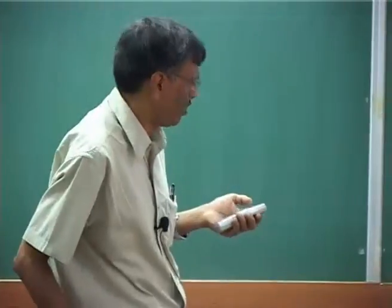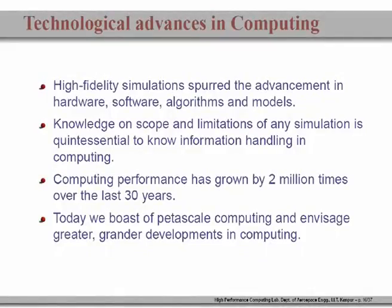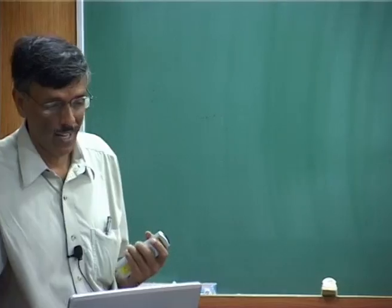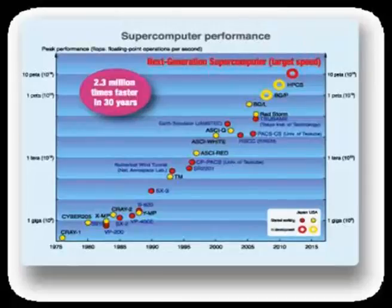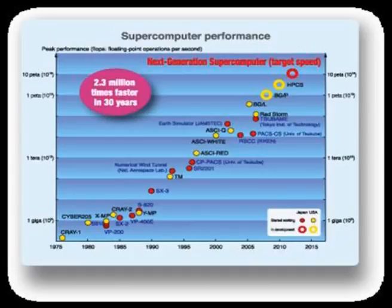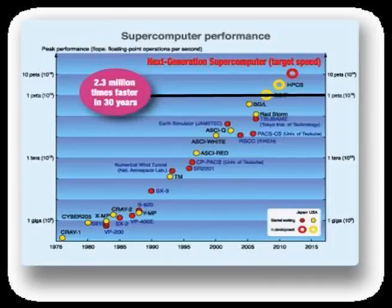Computing performance has grown by about 2 million times in the last 30 years — from 1975 to 2005. Today we have petascale computing and hope to do greater things. This is a comparison between USA and Japan: the red dots are Japanese machines, the yellows are USA machines. We are right now at one petaflop. Open circles are projected values, but we have already reached here. In 2008, we crossed the one petaflop rating. Japan plans to get to a 10 petaflop machine by 2011 or 2012.